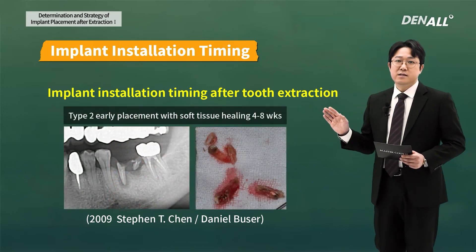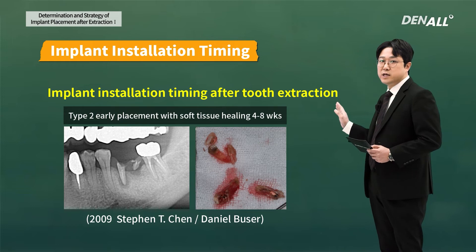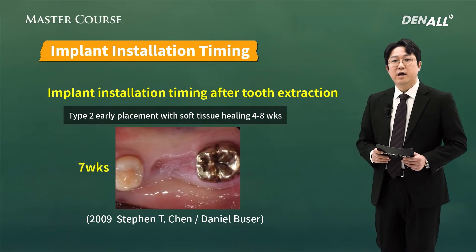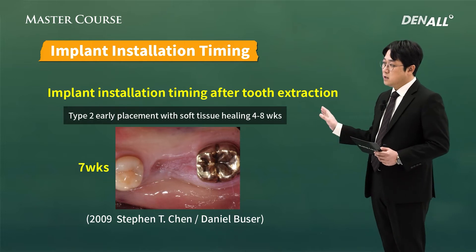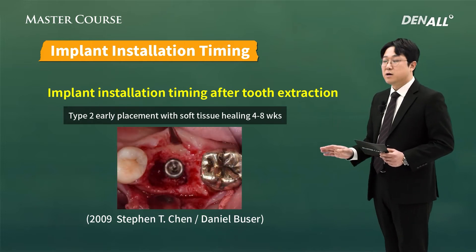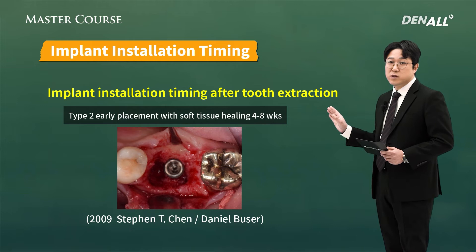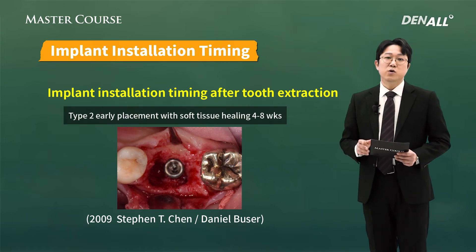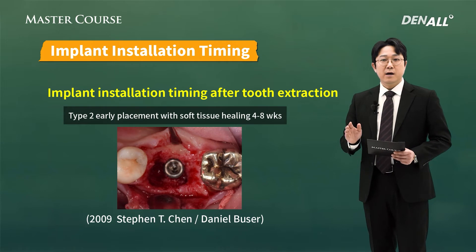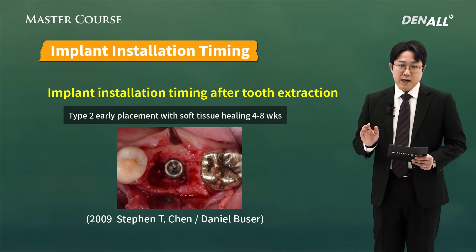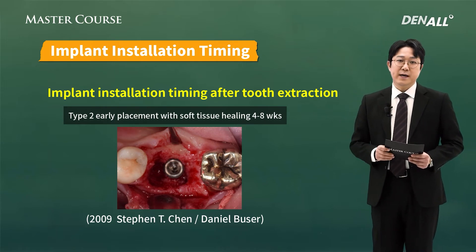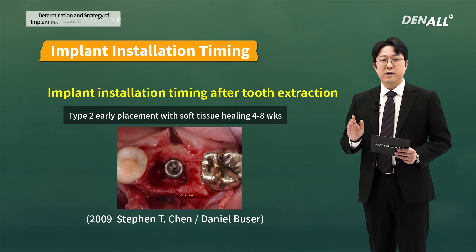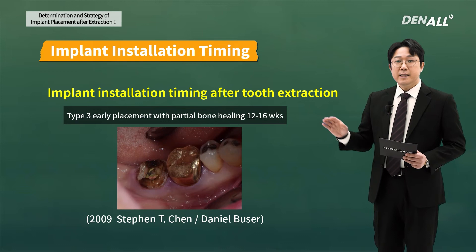Type 2: 4 to 8 weeks after extraction, the implant is placed. After extraction, soft tissue healing is done. But if you open the flap, sufficient bone healing is not made. Because there is no bone fill, when you place the implant you need to be cautious. But there is less stress in covering it with soft tissue.